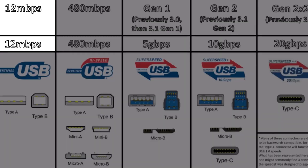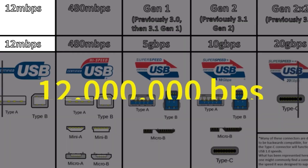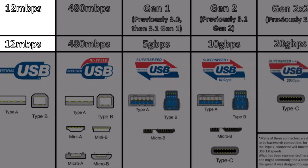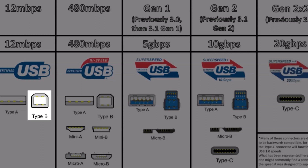USB 1.0 starts off at 12 megabits per second — that's 12 million bits per second. It would be called a certified USB and is compatible with your Type-A connector, which is what we're most familiar with — found on virtually every computer. Then there's the USB Type-B connector, often found in the back of printers, which is also compatible with USB 1.0 speeds.